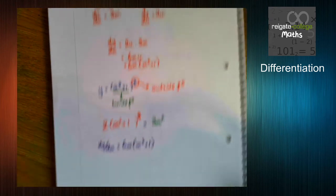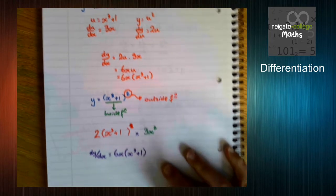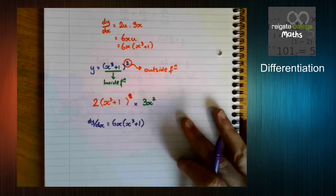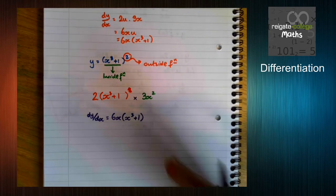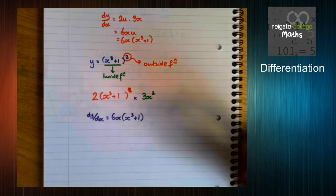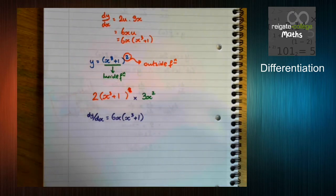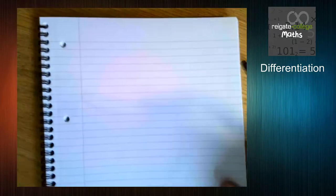Then all we do is times them together. And that's a lot quicker than this method. When you get onto the more complicated differentiation questions using additional rules, this is what you're going to have to do so that you can keep up the pace of a question.